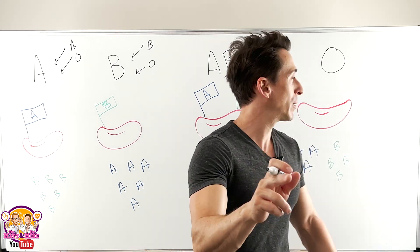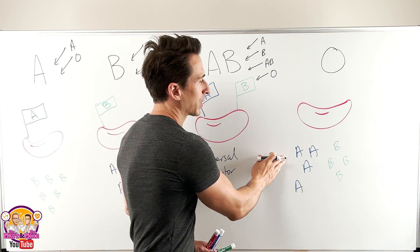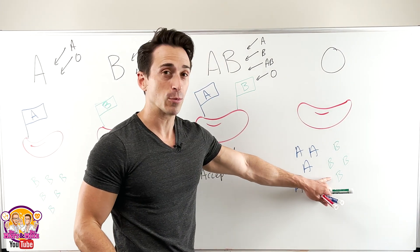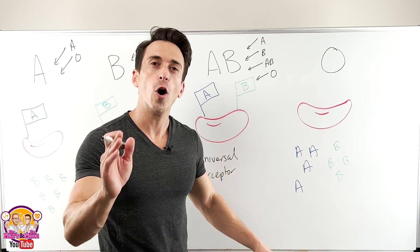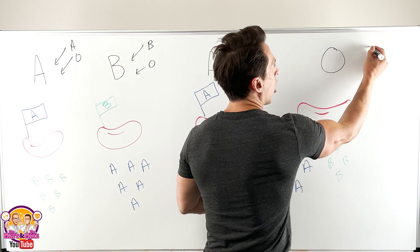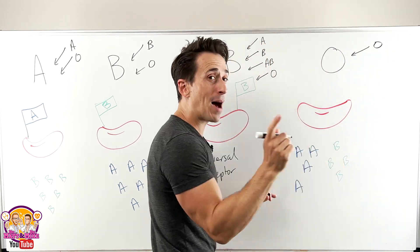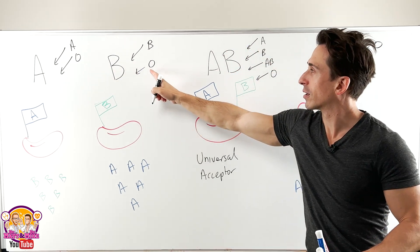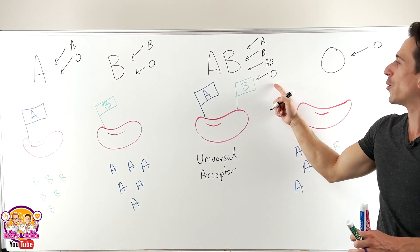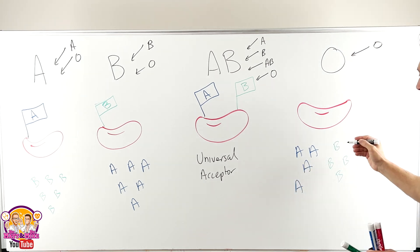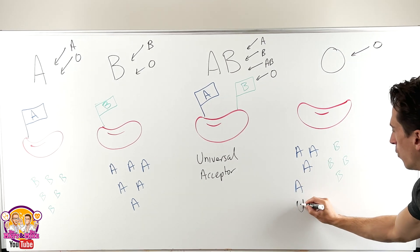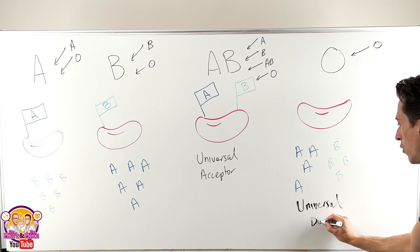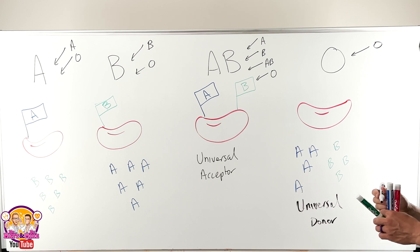Now let's take a look at blood type O. Can O receive A blood? No, because there are anti-A antibodies. Can't receive B blood. Can't receive AB blood. O can only receive O blood. But notice that all blood types — A, B, AB — can receive O blood. So O is actually known as the universal donor. If you are blood type O, you are the universal donor.